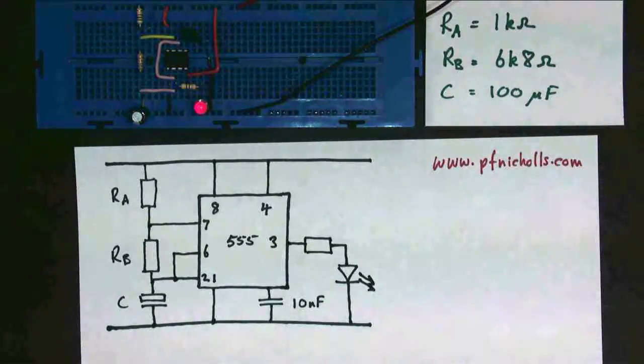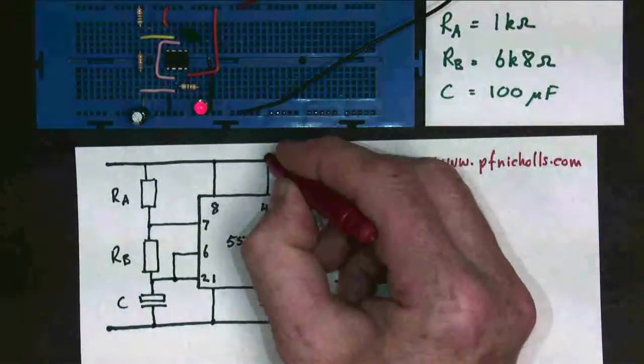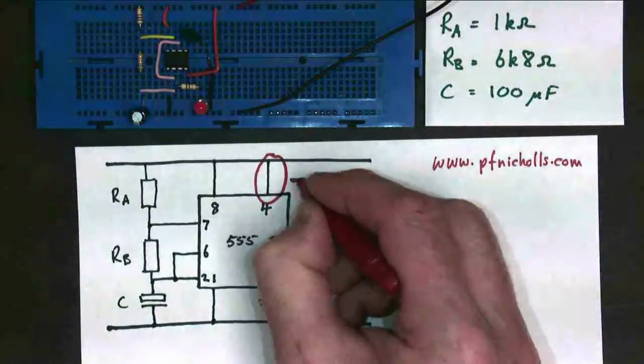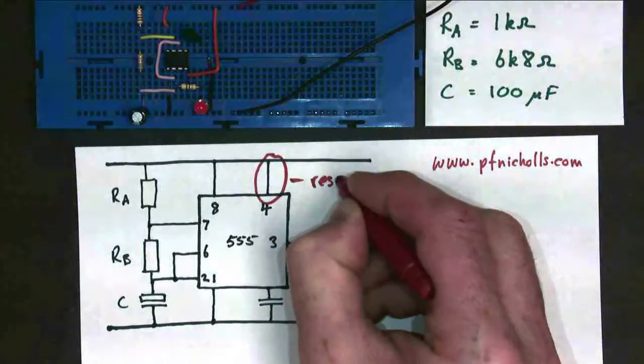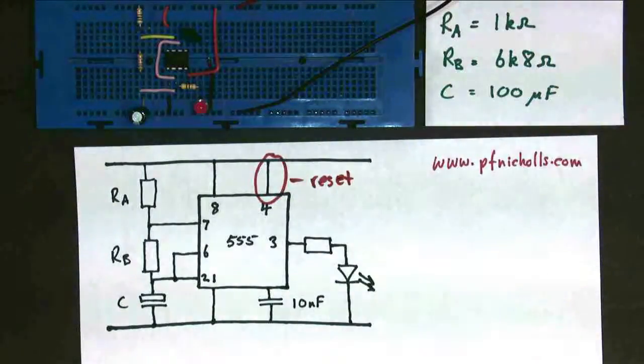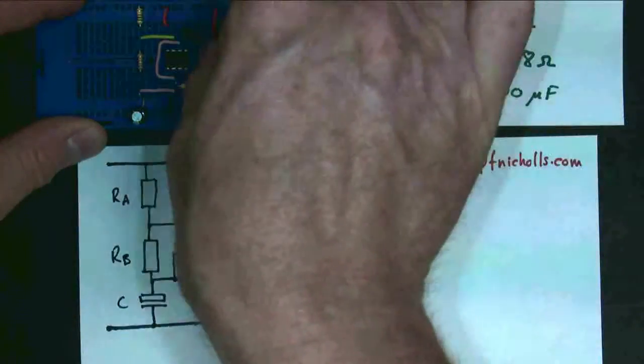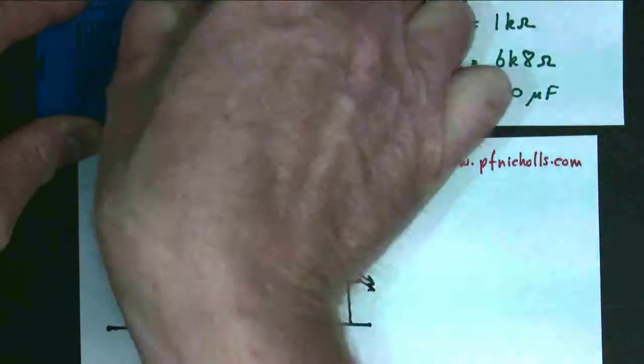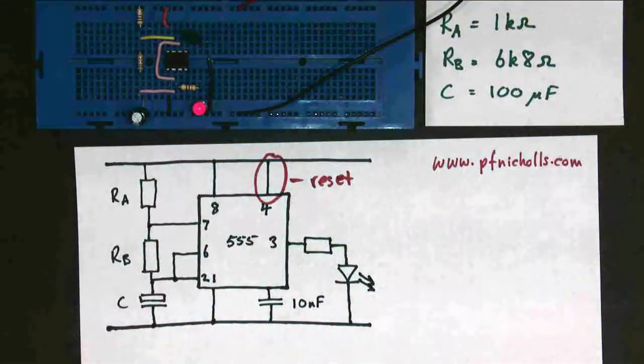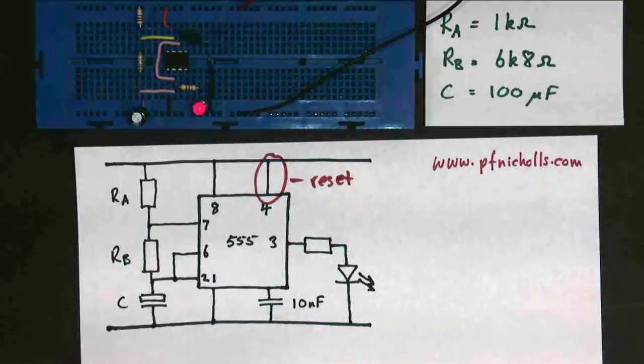Then I was going to talk about this red wire just here. This red wire is called in the data sheets the reset. But I think a better name for it would be the enable. I'm going to show you what it does. I'm going to take it out of the circuit, and what you'll notice is it's made absolutely no difference to the circuit whatsoever.